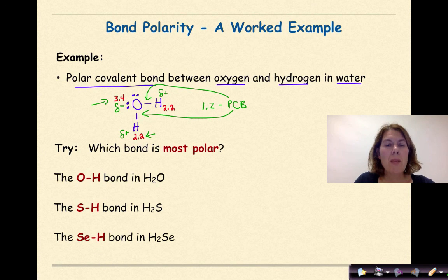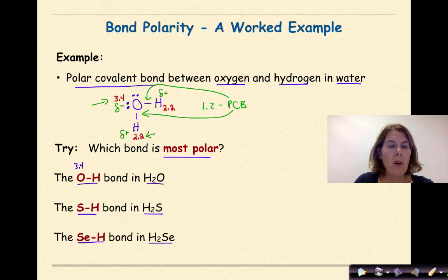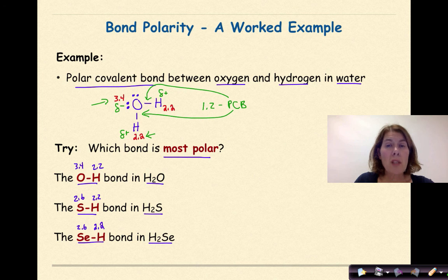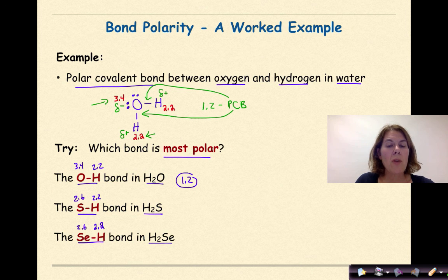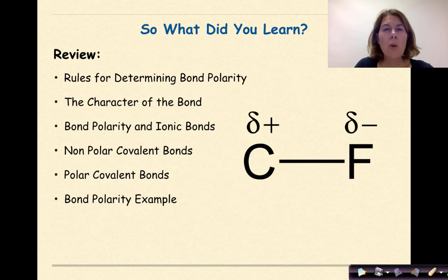Which bond is most polar: the O–H bond in water, the S–H bond in H₂S, or the Se–H bond in H₂Se? Assigning electronegativity values: O = 3.4, S = 2.6, Se = 2.6, H = 2.2 throughout. The differences are: O–H = 1.2, S–H = 0.4, Se–H = 0.4. The greatest difference in electronegativity determines the most polar bond — so the O–H bond in water is the most polar.